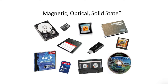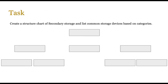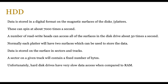Storage devices come in all shapes, sizes, and types. A task you might do is to create a structure chart listing common storage devices based on categories — start with secondary storage at the top, then go to magnetic, solid state, and optical, and list the different devices under each category. Now, hard disk drives are magnetic and data is stored in digital form on magnetic surfaces of disks and platters.